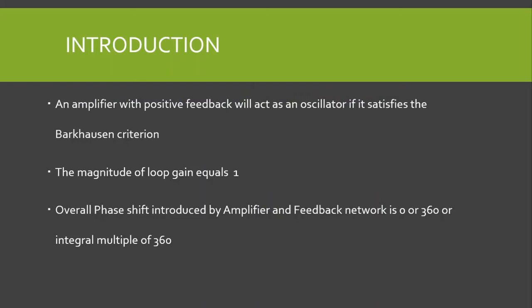In the previous video, we studied that an amplifier with positive feedback will act as an oscillator if it satisfies the Barkhausen criteria — that is, the magnitude of the loop gain βA equals 1, and the overall phase shift introduced by the amplifier and feedback network is 0 or 360 degrees, or an integral multiple of 360 degrees. We also studied that we do not need to apply any input voltage to an oscillator; the oscillator uses thermal noise voltage as the input voltage.